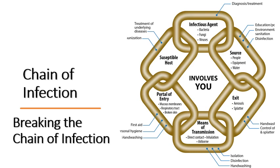For breaking the chain at the portal of exit: proper control of secretions and excretions, environmental sanitation, hand washing, and control of splatter are important. For controlling the mode of transmission, hand hygiene is very important. Finding the source, isolation, aseptic technique, proper device care, control of airflow, proper food handling, and environmental cleaning can minimize the mode of transmission and break the chain of infection.